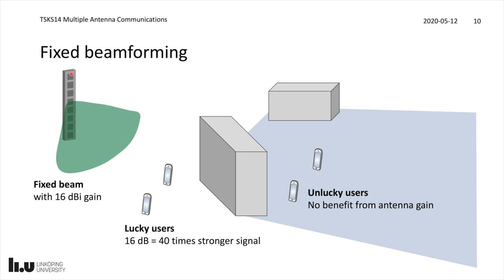This is actually an elementary form of multiple antenna communication where, within this panel, you have multiple antenna elements fed by the same signal — so there is a fixed relationship between them, which means the beam towards the lucky users is always the same. Those users benefit from a 16 dBi or 40 times stronger signal. But users who are not within the main beam area but are still in the coverage area will not benefit from this antenna gain at all and may even have a lower signal quality.